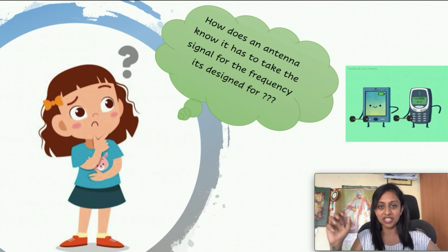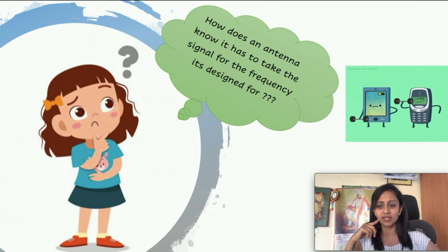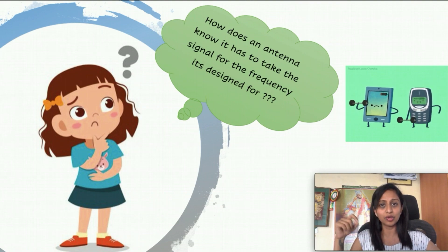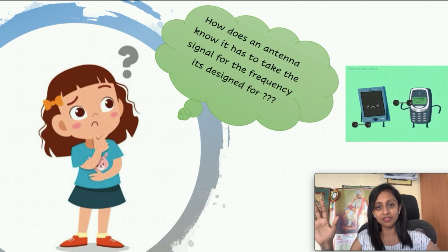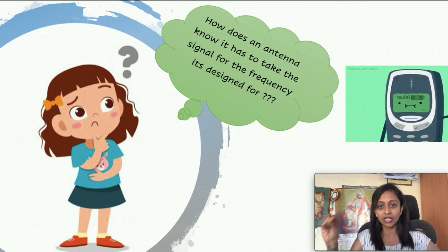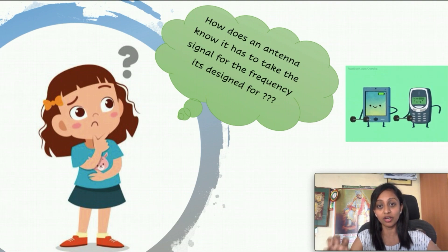That is our question. How does an antenna know that it has to take the frequency for which it is designed? That is something to be thought about. There are n number of antennas there, and all the energy of all different frequencies is falling on them. How does my antenna know that it has to take only the signal for which it is designed?